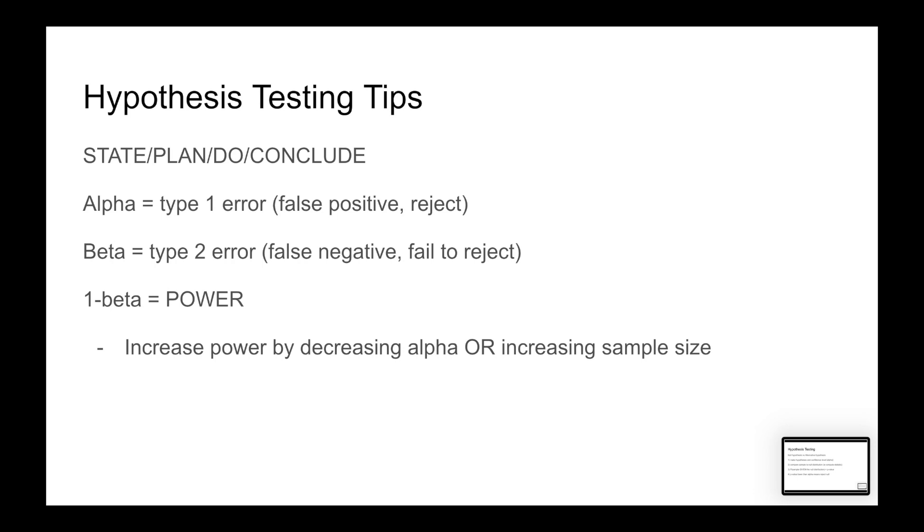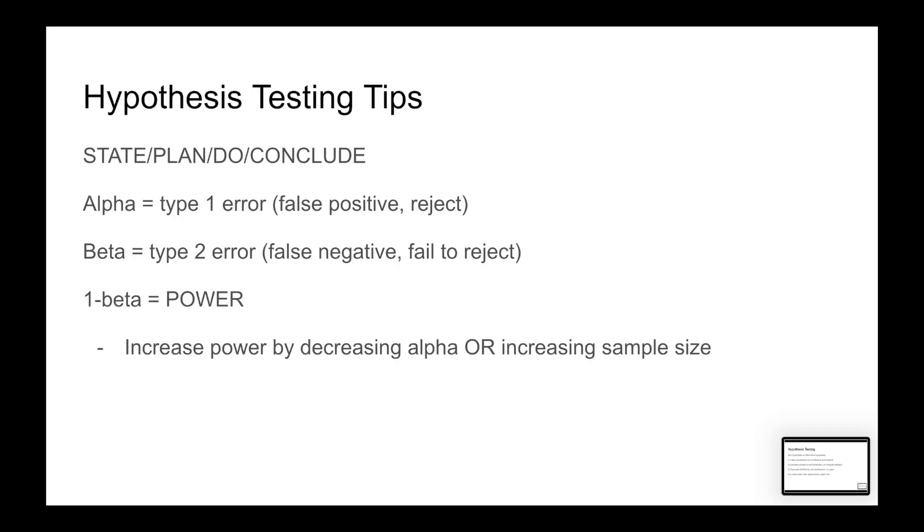Frame your problems as state, plan, do, conclude. State your hypothesis and confidence level. Plan by checking all the necessary conditions—normal, random, and independent. You have to memorize all of those. Do the work, or at least write down what your calculator did, because you're allowed to do that. And conclude by rejecting or failing to reject, based on how much proof you have. Don't say you accept either one. Hypothesis testing is proof by contradiction, so you're not allowed to do that. That's a mistake a lot of people make.